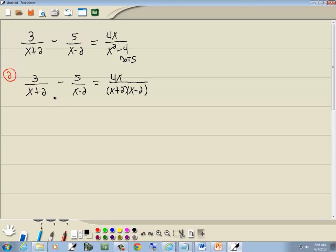Now to figure out what our LCM is, let's start with our first factor, the x plus 2. We're looking for the greatest number of x plus 2s in any single denominator. There's 1 here, none here, 1 here. So the greatest number of x plus 2s in any single denominator is 1.